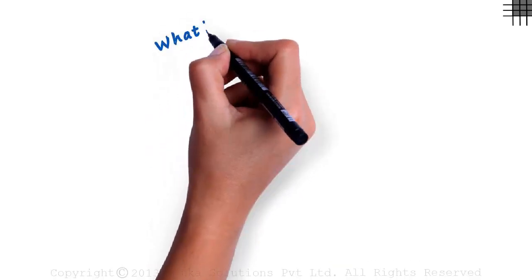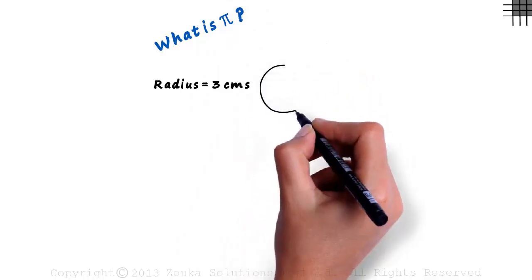Here's a very interesting question. What is Pi? Assume we draw a circle of radius 3 cm. It will look something like this.